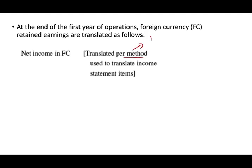Therefore, at the end of the first operation, the foreign currency retained earnings is translated as follows. We're going to take the net income in the foreign currency, whatever that net income is, and we're going to translate it using the method that we are using — the method could be temporal or the current method.